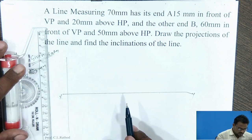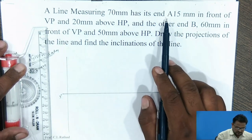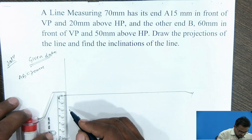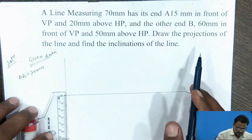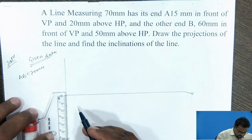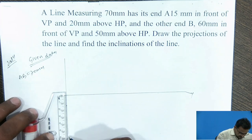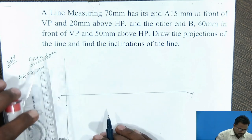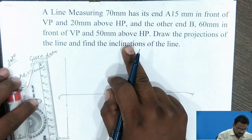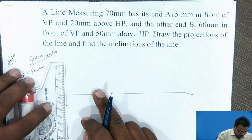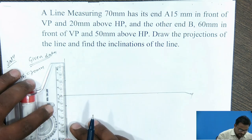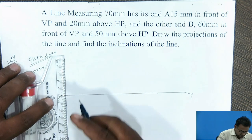It is given that one end A is 15 mm in front of VP, so I have to take 15 mm in front of VP. The other end B is 60 mm in front of VP, so I have to take 60 mm from the X-Y line. End A is 20 mm above HP and end B is 50 mm above HP, so I have to mark those distances accordingly on each side.